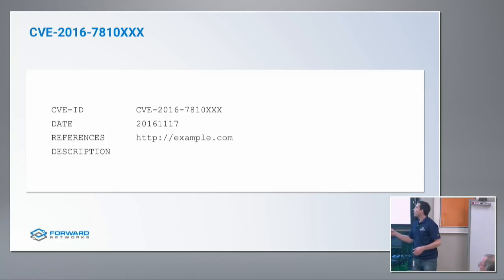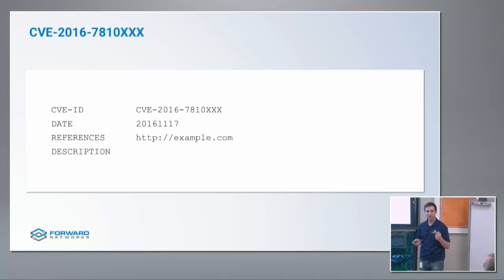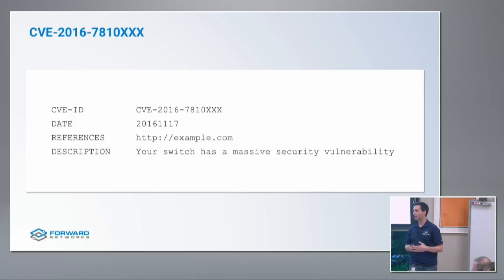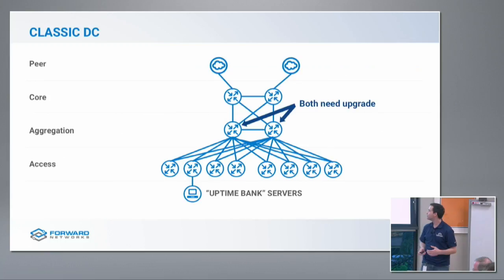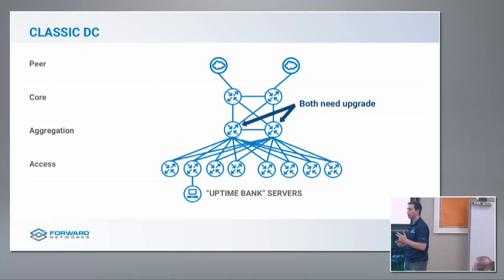One morning I wake up and get a CVE in my inbox. There's a critical vulnerability — pretty standard ID, date, and references — but one thing is unusually specific: a switch in my network needs to be updated. It has a critical security vulnerability. Ordinarily, I would do all I can not to upgrade software, hardware, or change config for Uptime Bank, but in this case I have to update these boxes.